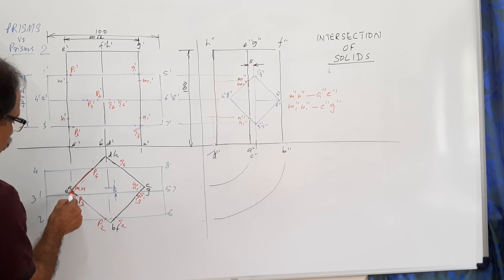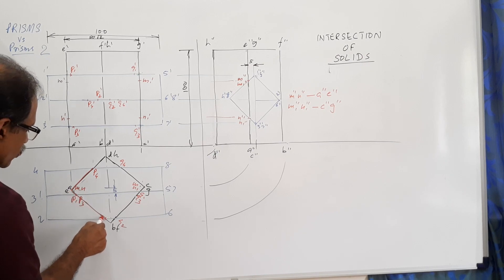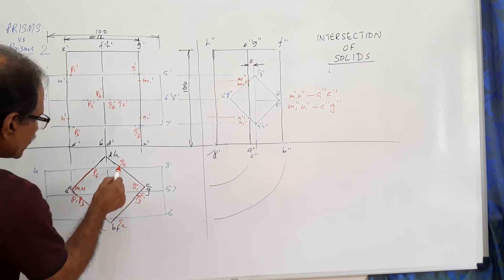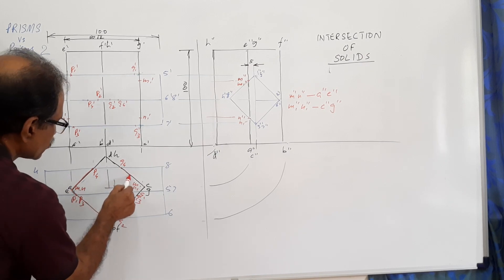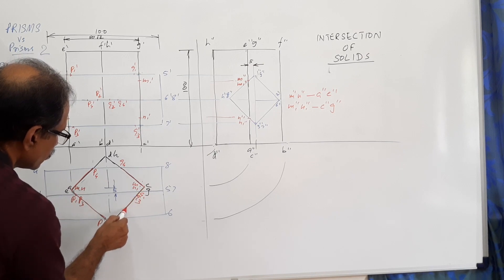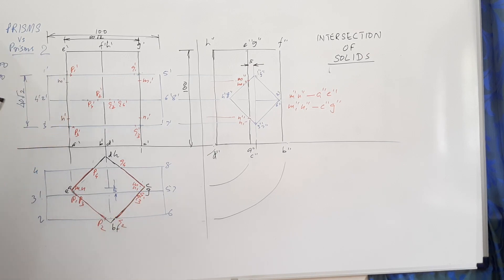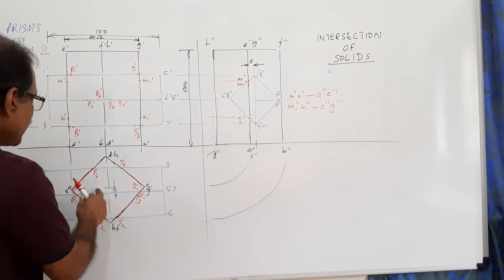At corner A you have got M and N; at corner C you have got M1 and N1. Now connect them in the plan: come to the corner and then go across. The intersection curve goes to the corner and continues. This portion of the intersection curve will be dotted.